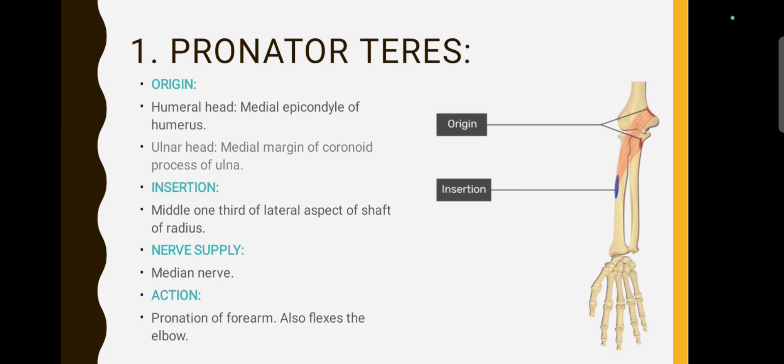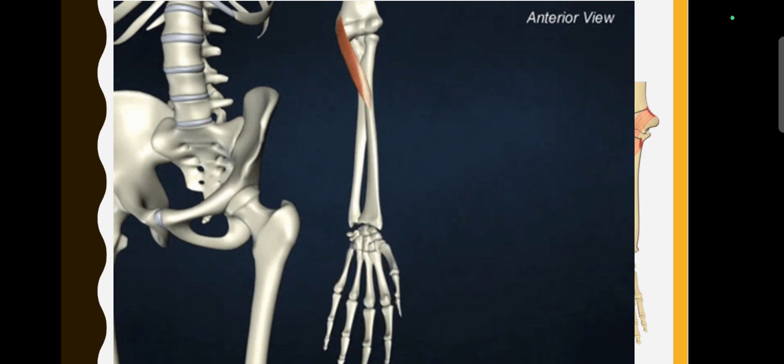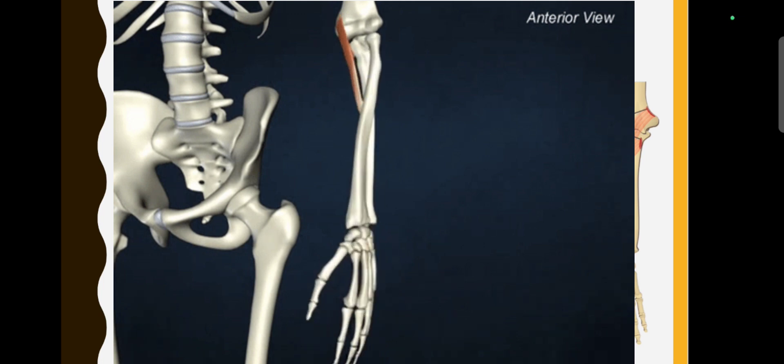If we see the function based on the muscle shape and name, it is a pronator performing pronation movement, so it is very helpful. Since it originates from the humerus and ulna and inserts on the radius, there is movement in the radioulnar joint. That is pronation, where pronator teres plays a very important role.